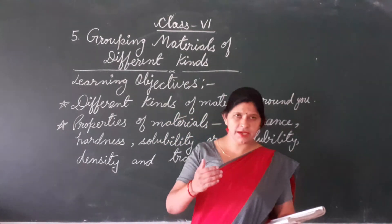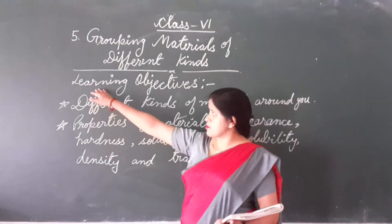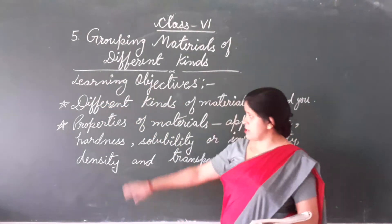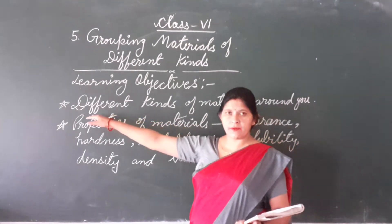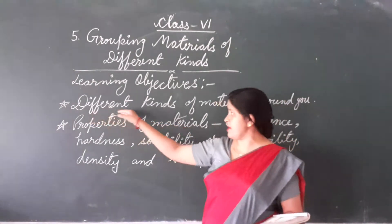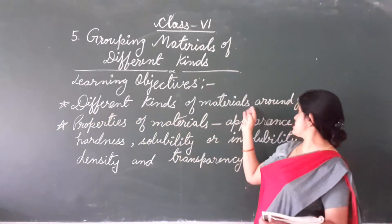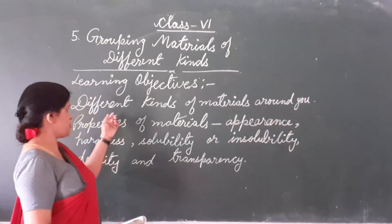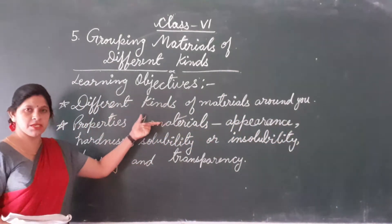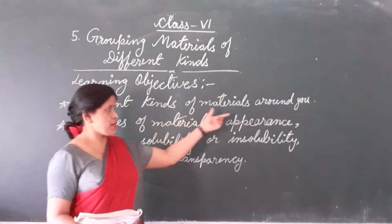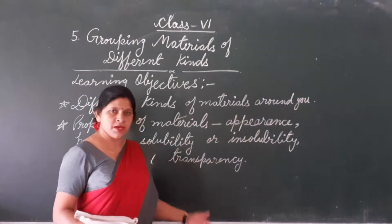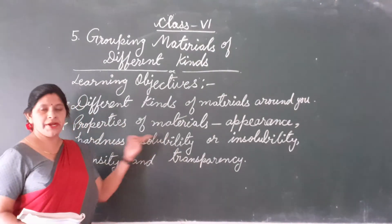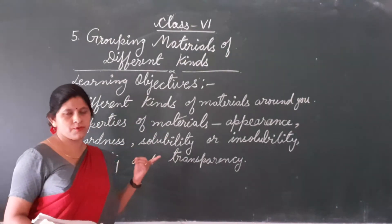Let us first learn about the learning objectives. What are the learning objectives? There are two learning objectives. Number one is the different kinds of materials around you. Number two is the properties of materials.